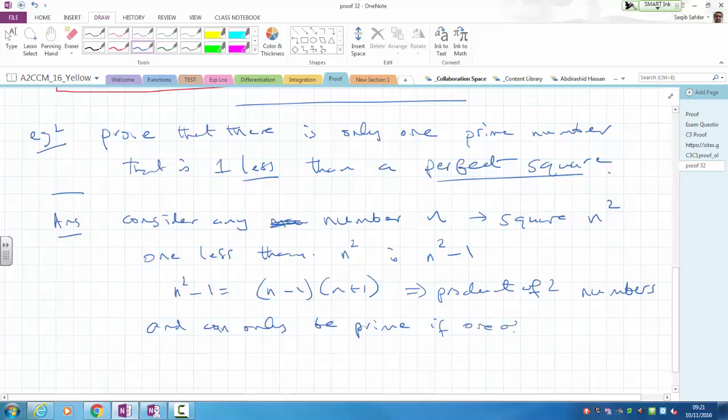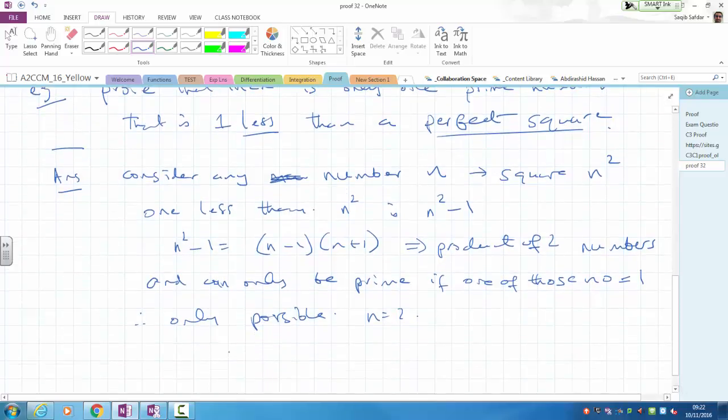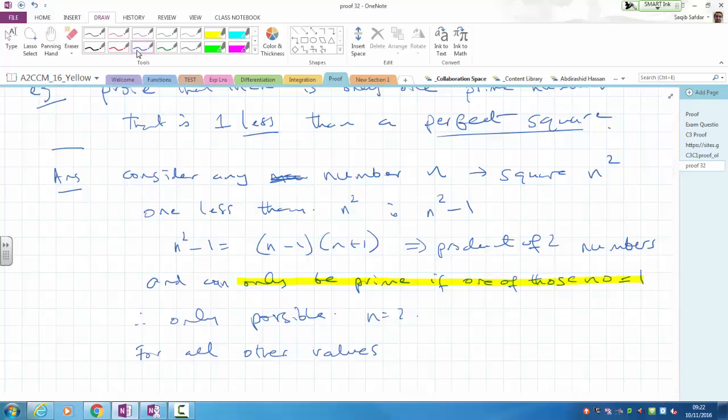And can therefore only be prime if what? If n minus 1 is equal to 1. Yes. If one of those numbers is what? And so that's only possible when n equals 2. Since you'll have 2 take away 1 is just 1, 2 plus 1 is 3. And that will give you 3 as your number.